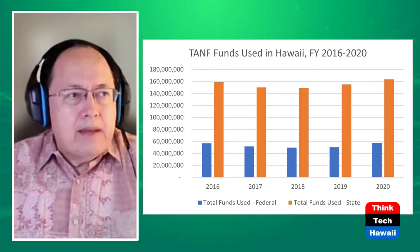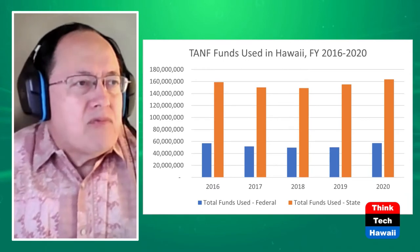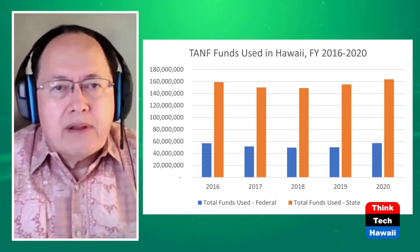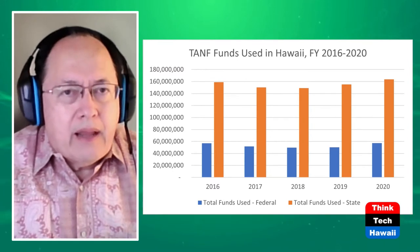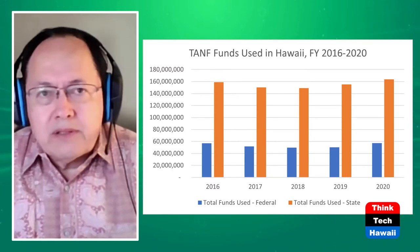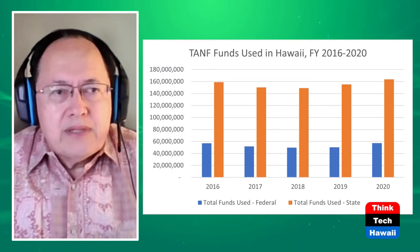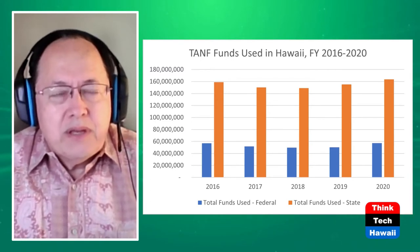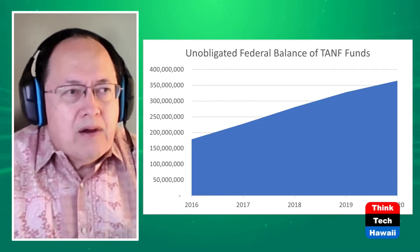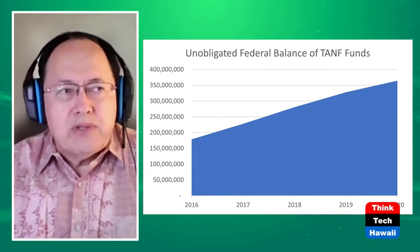The issue we're talking about today is that we're authorized for about $100 million a year, but look how much we're actually spending. The blue bars on that first graph hover around $50 to $60 million a year. We're authorized for about $100 million a year — what happens to the amount we don't spend? Well, it gets carried over. And that brings us to the second graph, which shows the unobligated balance of the federal monies available to the state of Hawaii.